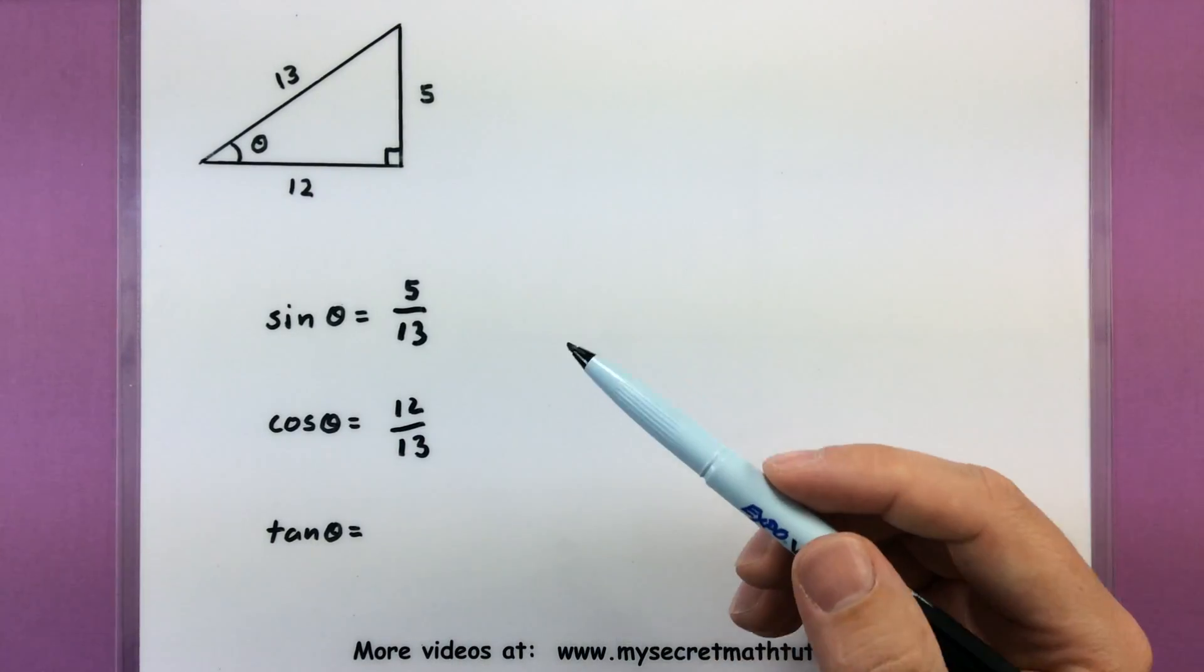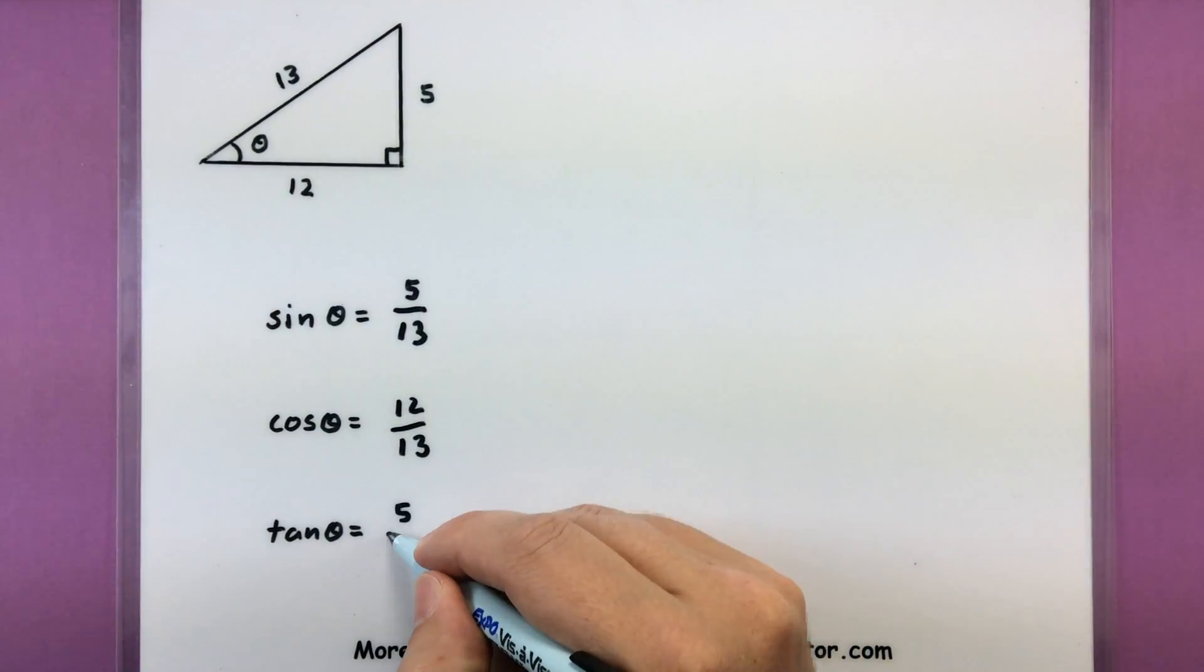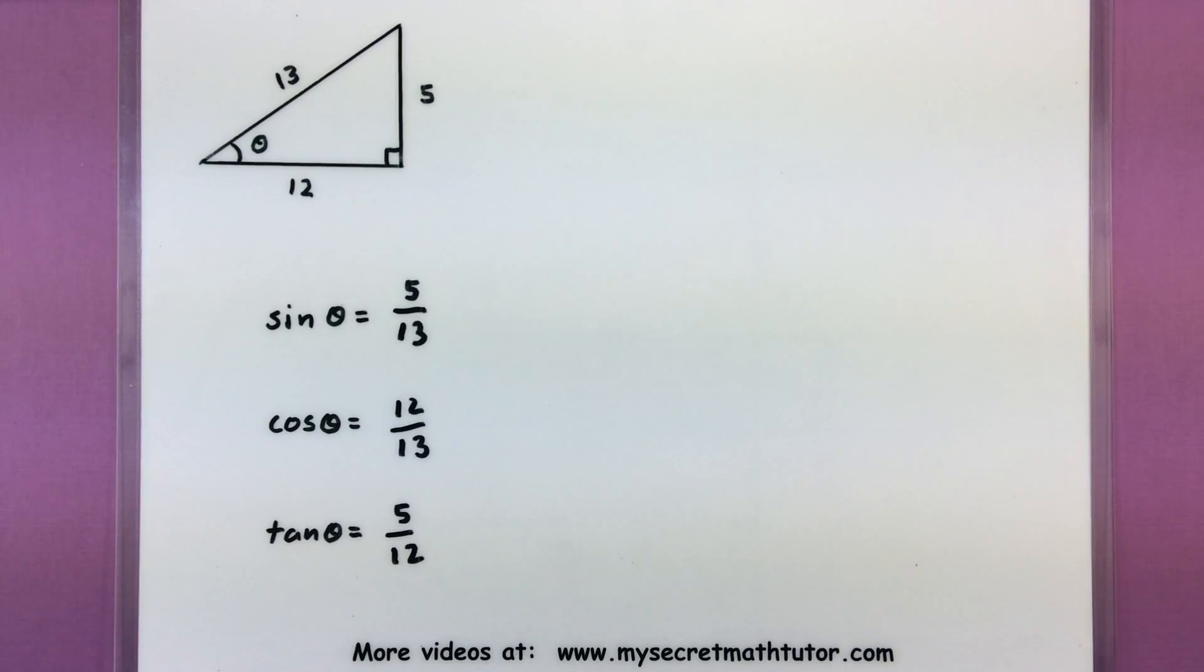Alright, one more. We want to find tangent, that would be the opposite side over the adjacent side, so we have 5 twelfths. Nice and quick.